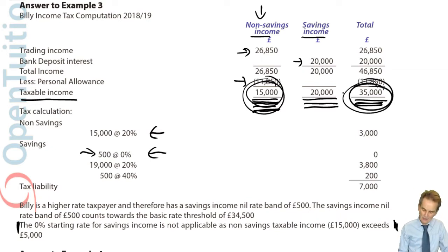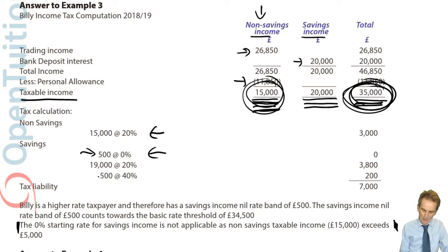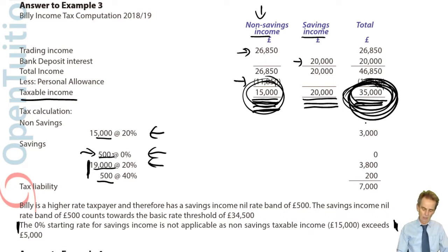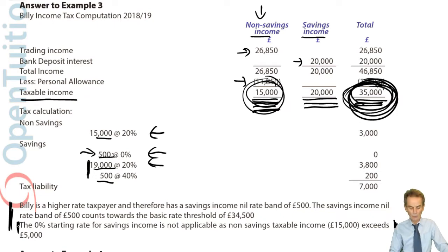Since £35,000 is £500 above the basic rate band limit, of the remaining £19,500 of savings income, the first £19,000 stays within the basic rate band — because £15,000 plus £500 plus £19,000 equals £34,500 — and is taxed at 20%. The final £500 is pushed into the higher rate band and taxed at 40%. Make sure you've understood that before moving on.